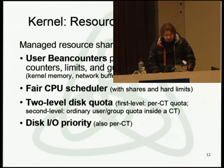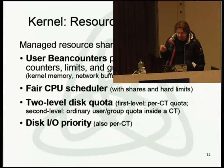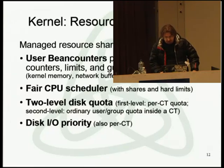Third, two-level disk quota: since a container's filesystem is a directory on the host, we have per-container disk quota per directory, and inside the container users can use standard Linux quotas. Fourth, disk I/O priority: many containers can affect each other badly, so you can isolate bad actors by giving them low I/O priority. For networking, there's the TC tool which provides QoS, traffic shaping, and other controls — that's pretty much solved without us.